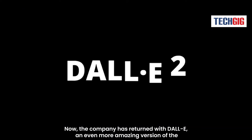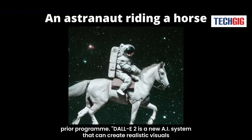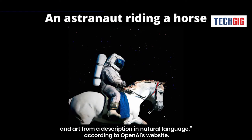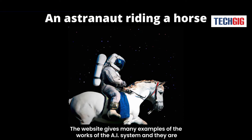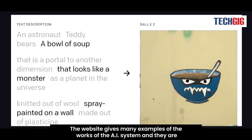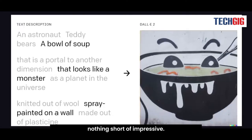Now the company has returned with DALL·E 2, an even more amazing version of the prior program. DALL·E 2 is a new AI system that can create realistic visuals and art from a description in natural language, according to OpenAI's website. The website gives many examples of the works of the AI system and they are nothing short of impressive.